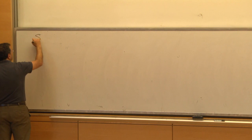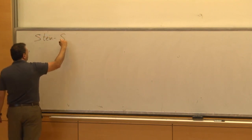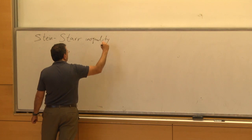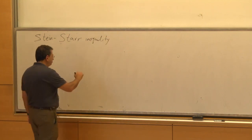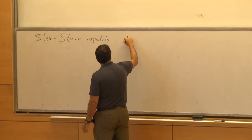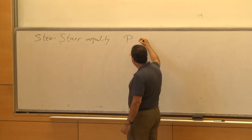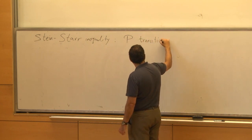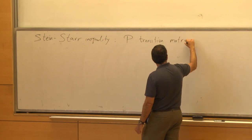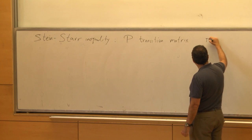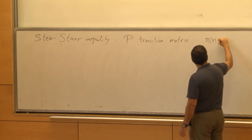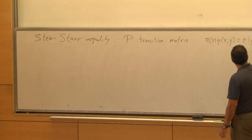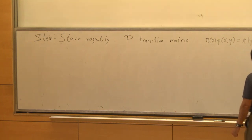This is the Stein-Star inequality. So P is going to be the stochastic matrix, or just a transition matrix for a Markov chain. Pi is the stationary measure, and we're going to assume reversibility.